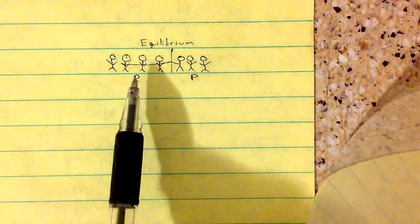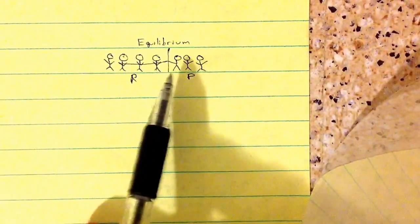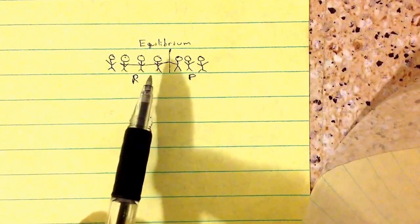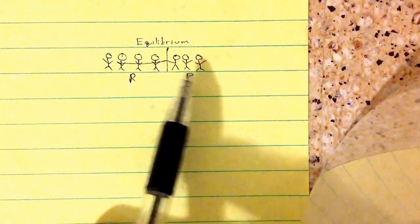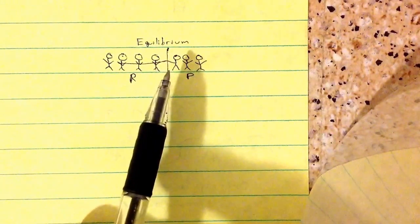So if there's four people, it's going to push this wall to the left. Or I'm sorry, to the right. Because these four people are going to be stronger than these three people. So it's going to push this equilibrium to the right. The equilibrium is going to shift to the right.